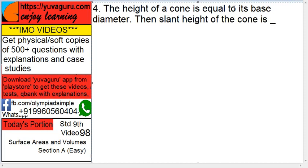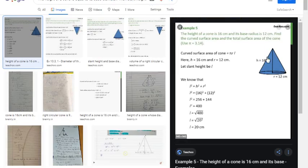The height of a cone is equal to its base diameter. Then the slant height of the cone is - see, this is the cone, this is the diameter, the base diameter, this is the height, and this is the slant height.